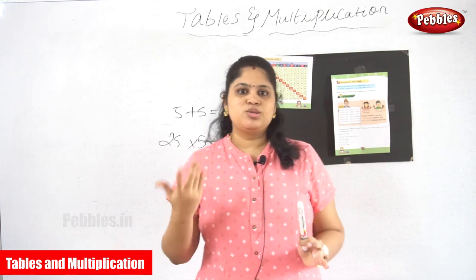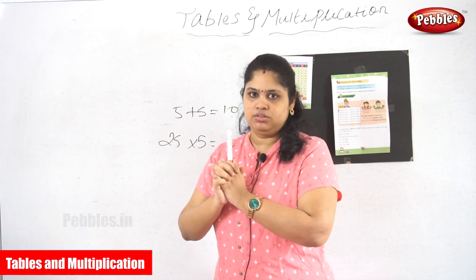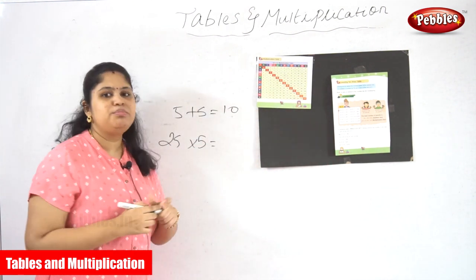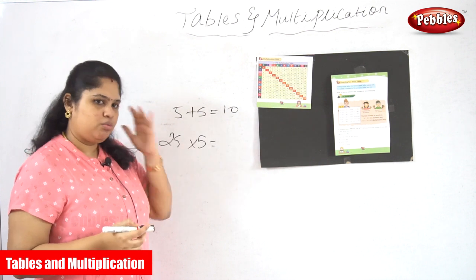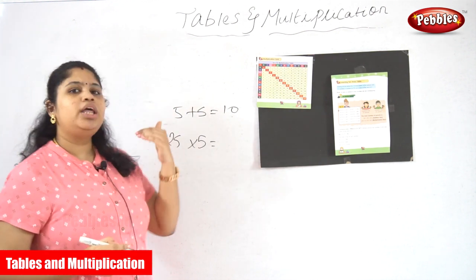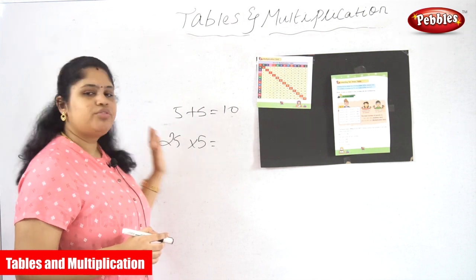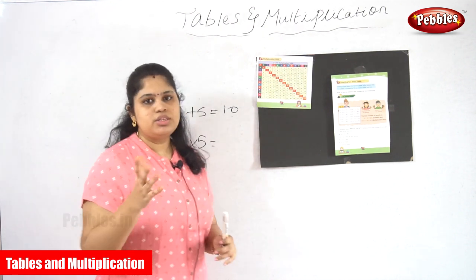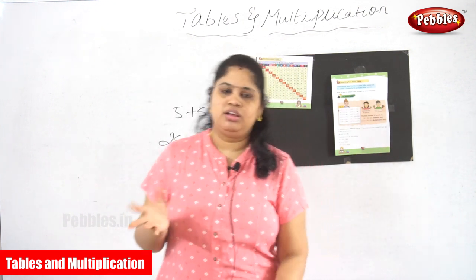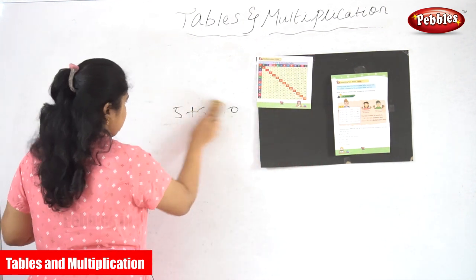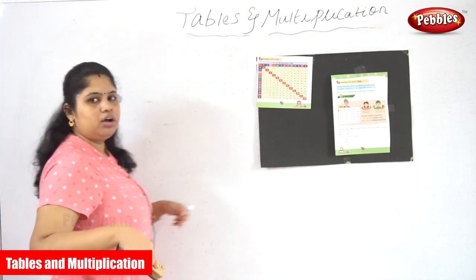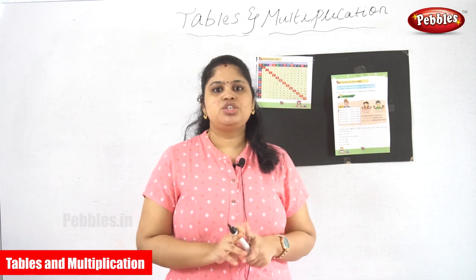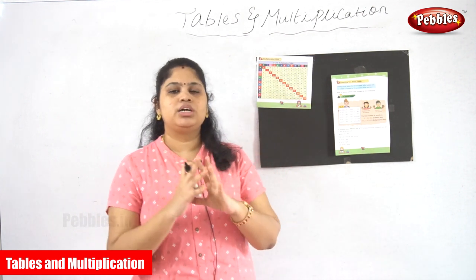At some point you will miss a number or get tired. That is the main reason we use a shortcut — we make addition simpler. The simpler form of repeated addition is multiplication. To avoid repeated addition we use tables and multiplication. Twenty-five into five is the actual process — multiplication is nothing but a collection of repeated additions put together.